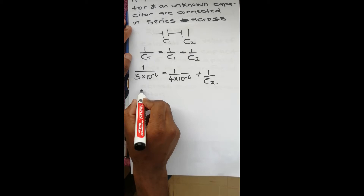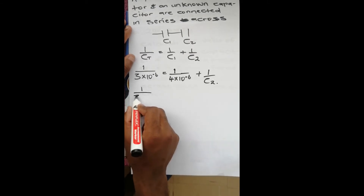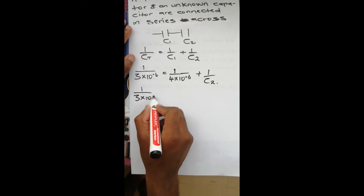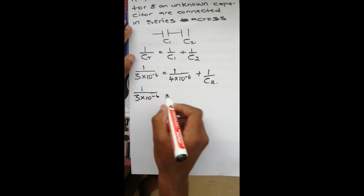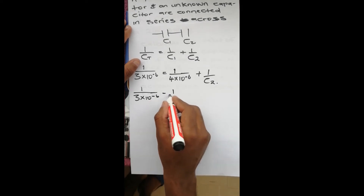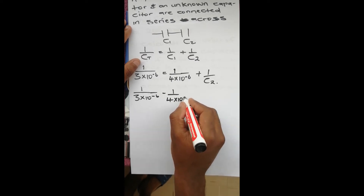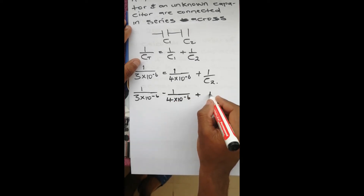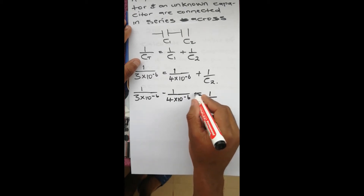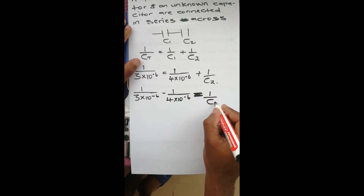To do that, we take one over four times ten to the power negative six to the other side, so we have: one over three times ten to the power negative six minus one over four times ten to the power negative six equals one over C2.